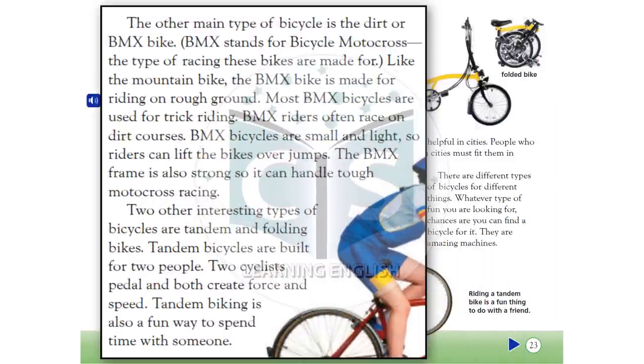The other main type of bicycle is the dirt or BMX bike. BMX stands for bicycle motocross, the type of racing these bikes are made for. Like the mountain bike, the BMX bike is made for riding on rough ground. Most BMX bicycles are used for trick riding. BMX riders often race on dirt courses. BMX bicycles are small and light, so riders can lift the bikes over jumps. The BMX frame is also strong, so it can handle tough motocross racing.